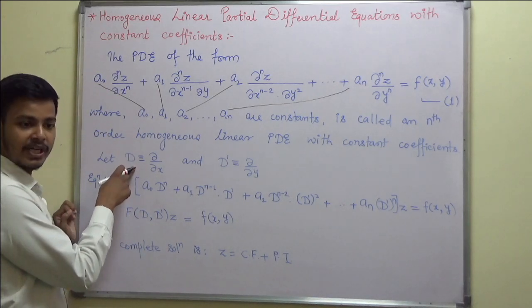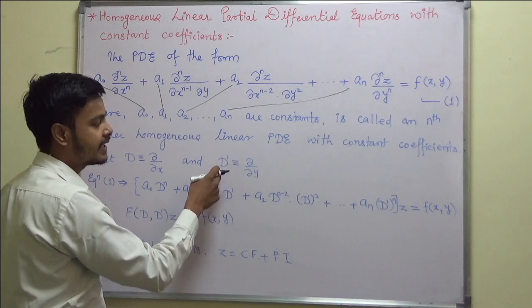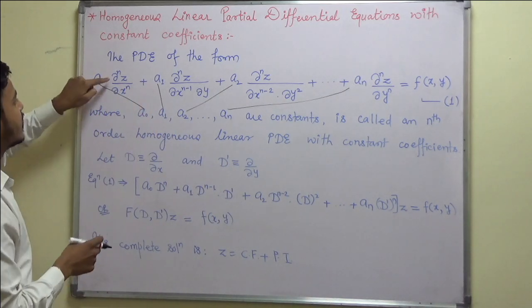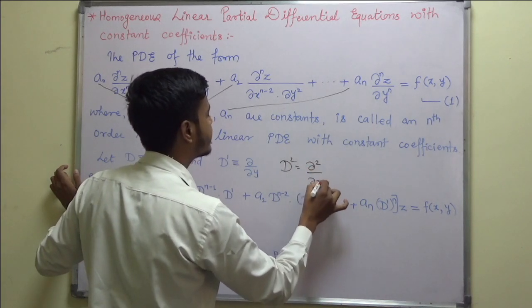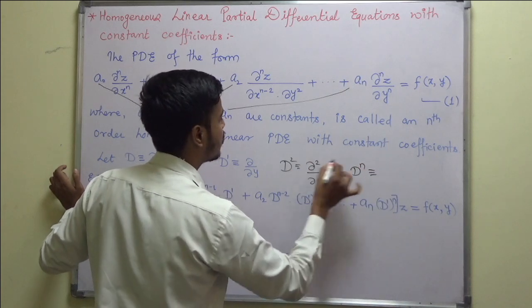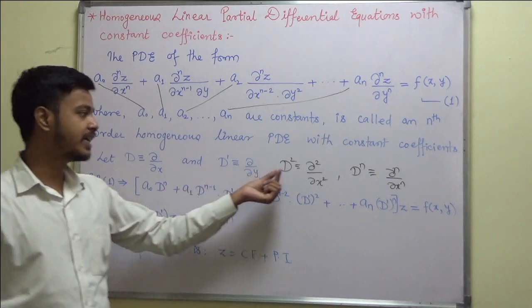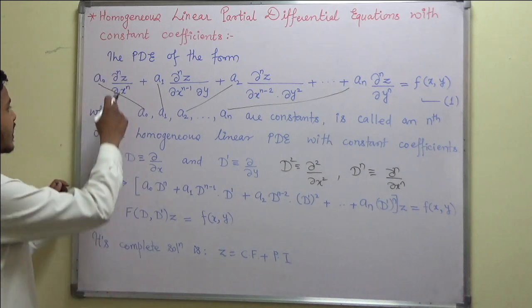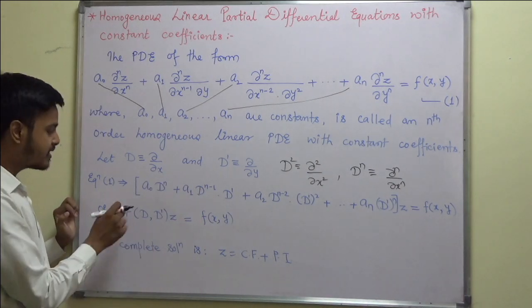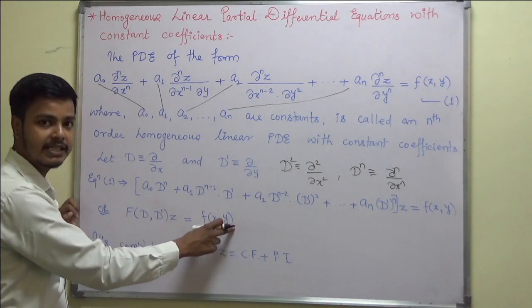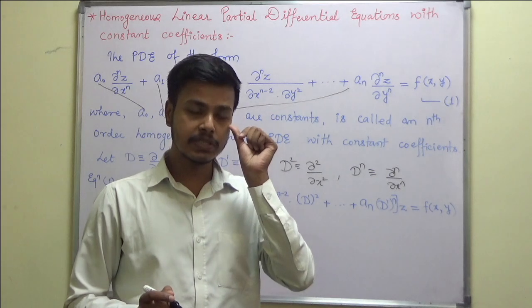Now, the notation we use here: suppose I denote ∂/∂x by capital D and ∂/∂y by D dash. So if D stands for ∂/∂x, then D² stands for ∂²/∂x², and Dⁿ stands for ∂ⁿ/∂xⁿ. This being an operator, it cannot be equal to zero — that's why I am writing an equivalent sign here. Writing this equation in terms of D, we get the generalized form: f(D, D') operating on z equals f(x, y). This is the general form of the homogeneous linear PDE with constant coefficients.